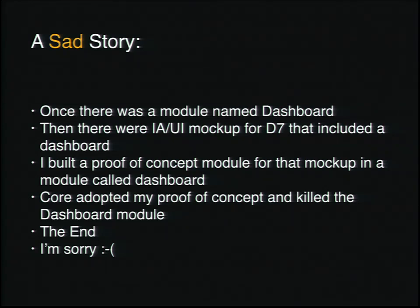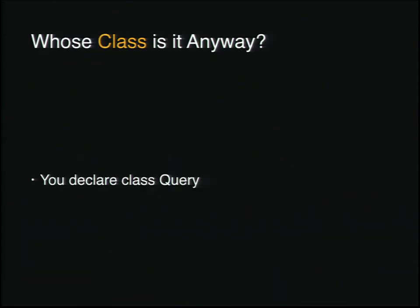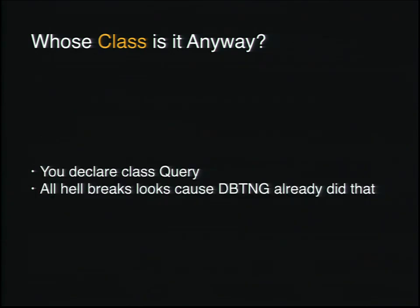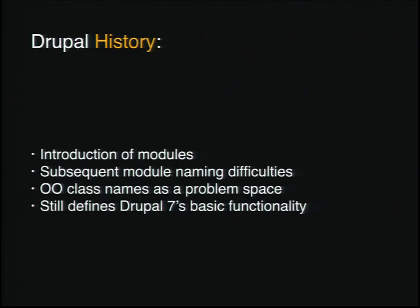This is not a unique story, but I did this, and it was an accident. I'm sure worse things happened during this period of time, both before and since. Then we had OO class names as a problem space as well — whose class is it anyway? You declare a class called Query, all hell breaks loose because DBTNG already did that. This isn't actually a Drupal problem — you can deal with this in PHP today. If you're doing object-oriented code of a certain age, it's likely that you're having to keep track of other people's class names so that you don't write something by the same name. All of this really still defines Drupal 7's basic functionality to this day — it's not necessarily true of Drupal 8, and we'll get into that.